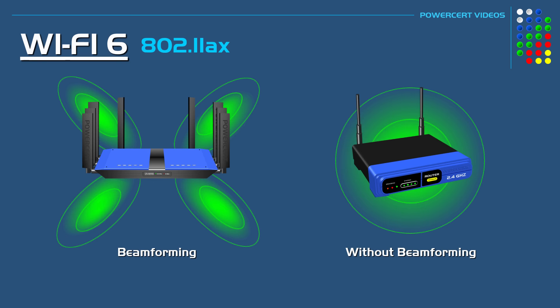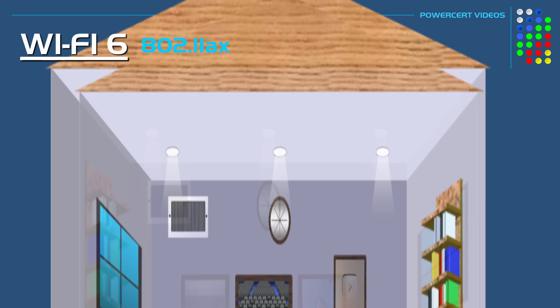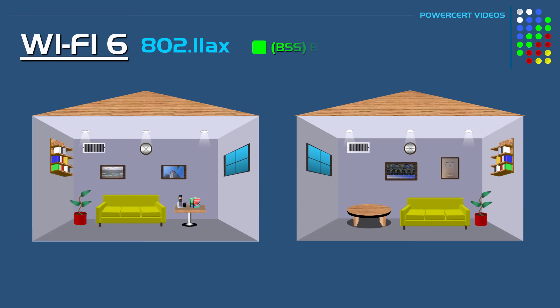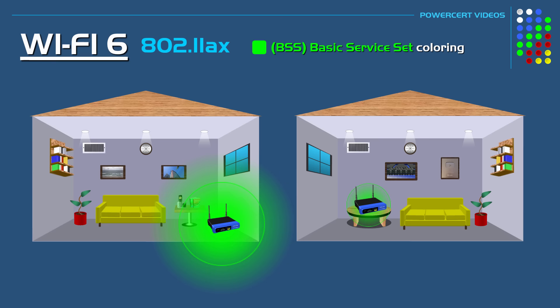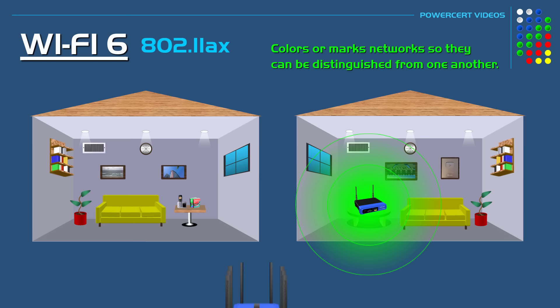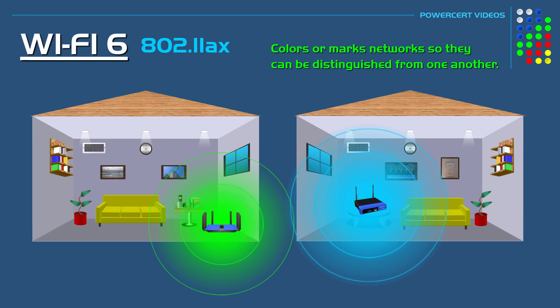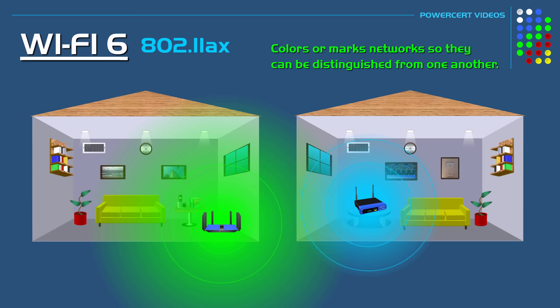Wi-Fi 6 also has the ability to minimize interference from nearby networks, and it does this by using a technology called basic service set coloring, or BSS coloring. When you have two Wi-Fi routers next to each other, such as with neighbors, the signals from the two networks can overlap and cause interference. With BSS coloring, Wi-Fi 6 colors or marks the networks so it can distinguish another network from its own. It marks frames from nearby networks so that your router disregards them, making your Wi-Fi router more efficient — because the less time a router gets distracted, the more responsive it can be.